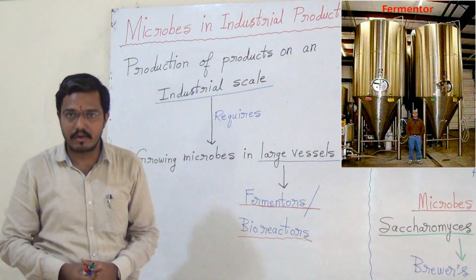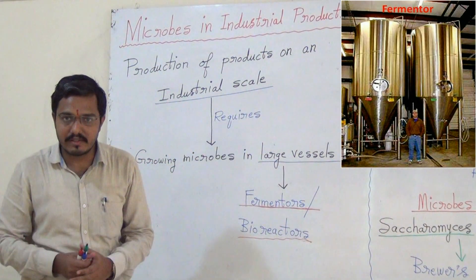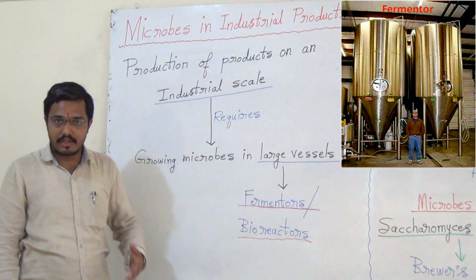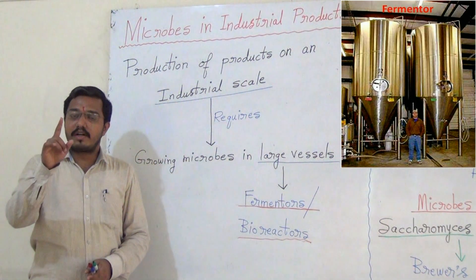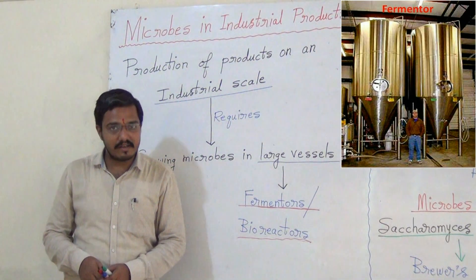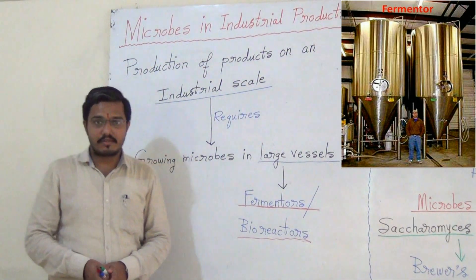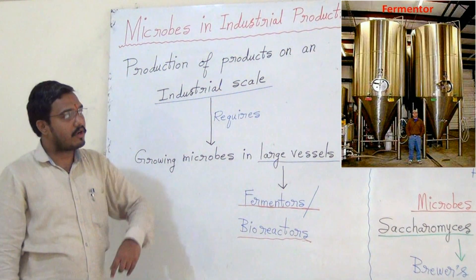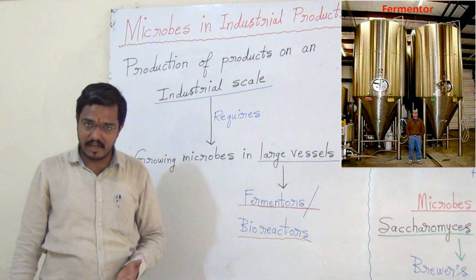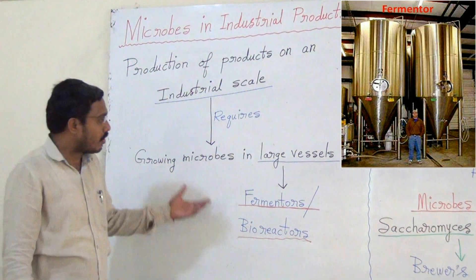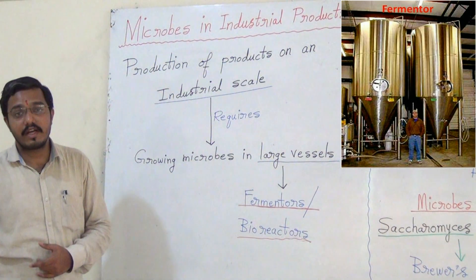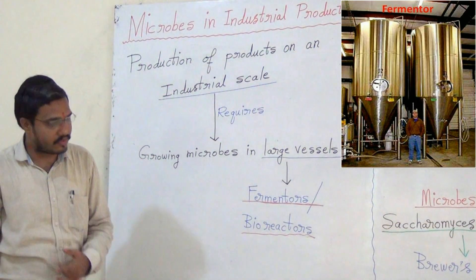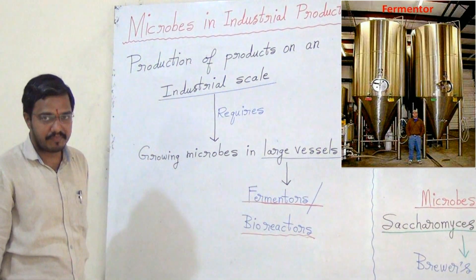Those big tanks are called fermenters. What are fermenters? The answer is: production of products on an industrial scale requires growing microbes in large vessels. They are called fermenters.